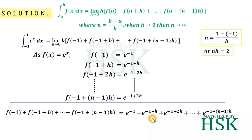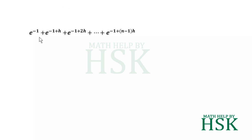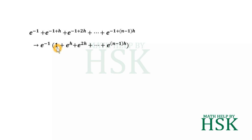This will be equal to e to the power of minus 1, plus e to the power of minus 1 plus h, plus e to the power of minus 1 plus 2h, and so on up to e to the power of minus 1 plus n minus 1 into h. To calculate the total, I can take e to the power of minus 1 as common, and obtain e to the power of minus 1 times 1 plus e to the power of h, plus e to the power of 2h, and so on up to e to the power of n minus 1 into h.